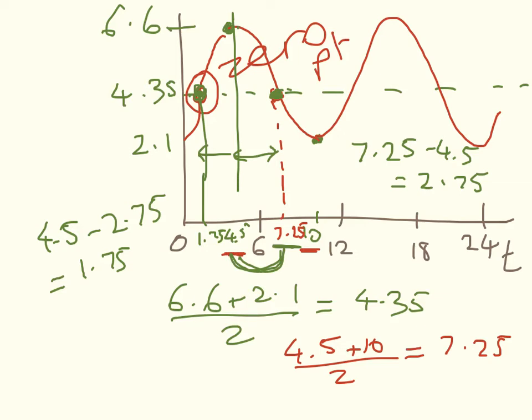That is the most horrendously messy graph. On the next slide, I'm going to draw the version that we can do now which has just got the key points on it. So here's my sine curve. I've got my midline going through at 4.35, because that is halfway between the maximum of 6.6 and the minimum of 2.1. This is water level.